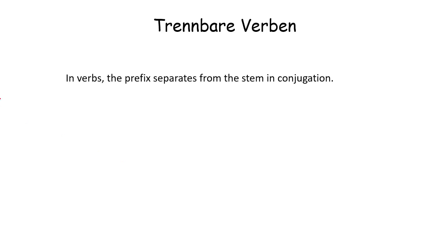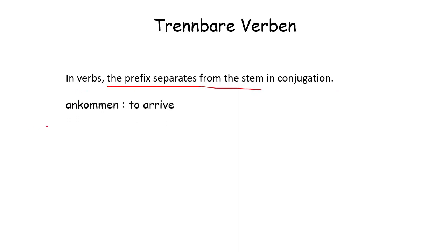In separable verbs, the prefix separates from the stem in conjugation. For example, 'ankommen' — 'an' is the prefix and 'kommen' is the verb. When we make a sentence, 'kommen' takes the second position and conjugates with the subject, while 'an' comes at the end of the sentence.